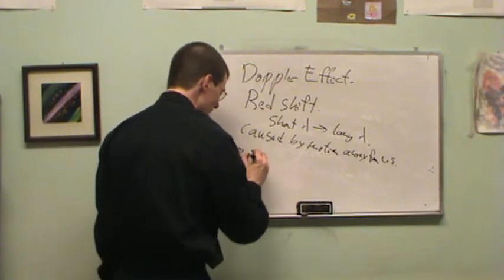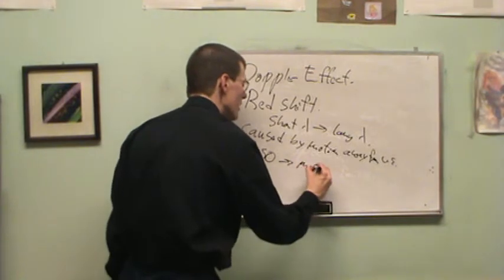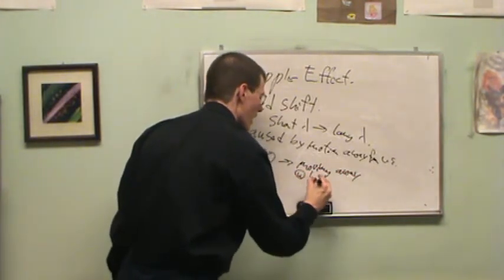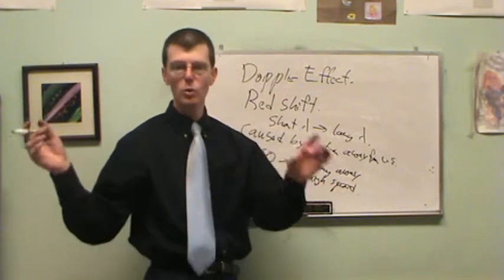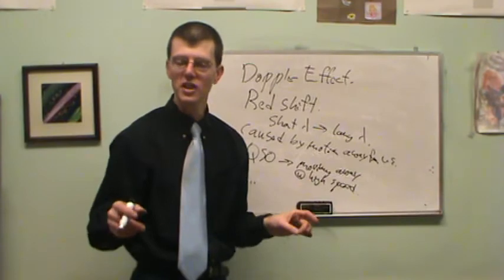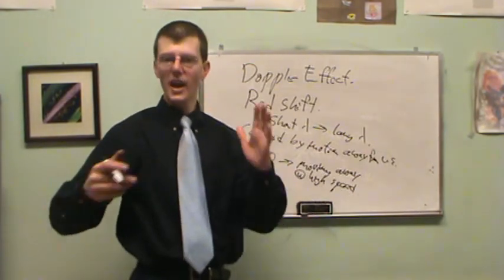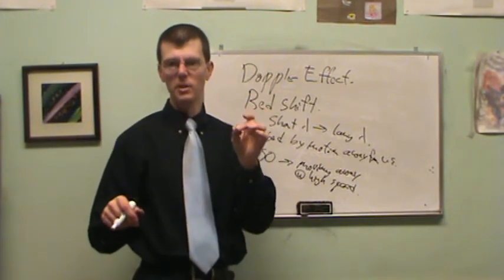Moving away from us at high speed. So this QSO, this quasar, is moving away, away at high speed. Why would it be moving away from us at high speed? Ooh, Hubble's Law. The universe is expanding. It's getting carried away by the expansion of the universe.